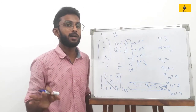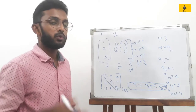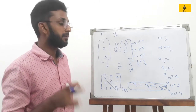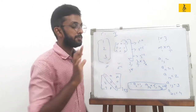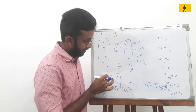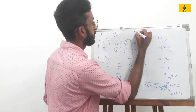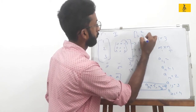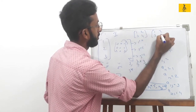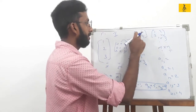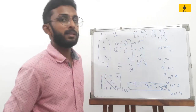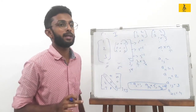Next, equality of two matrices. Two matrices are equal if they have the same order and corresponding elements are equal. For example, a 2 by 2 matrix with elements 1, 2, 3, 4 is equal to another 2 by 2 matrix with the same elements 1, 2, 3, 4. This is the equality of two matrices.